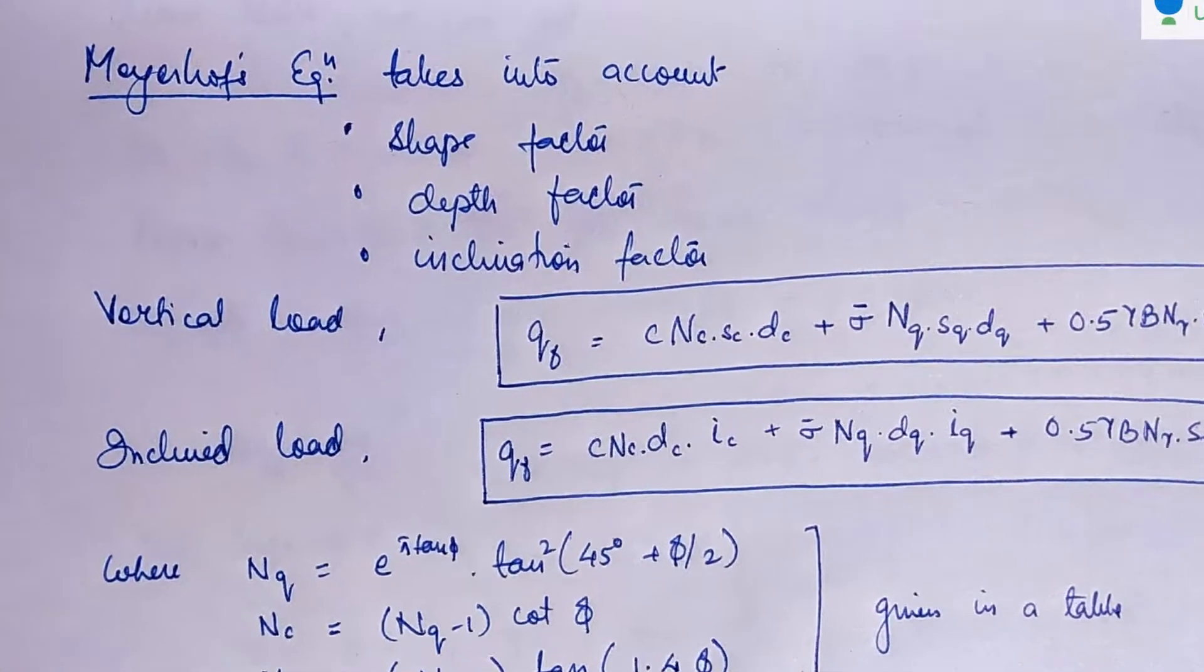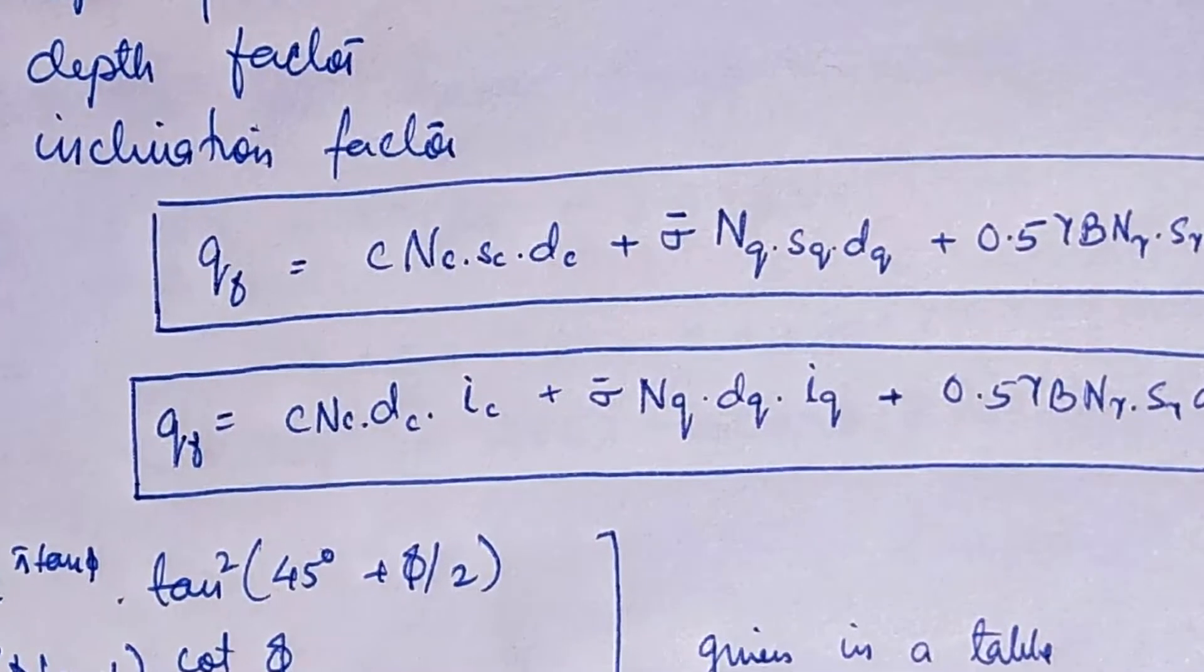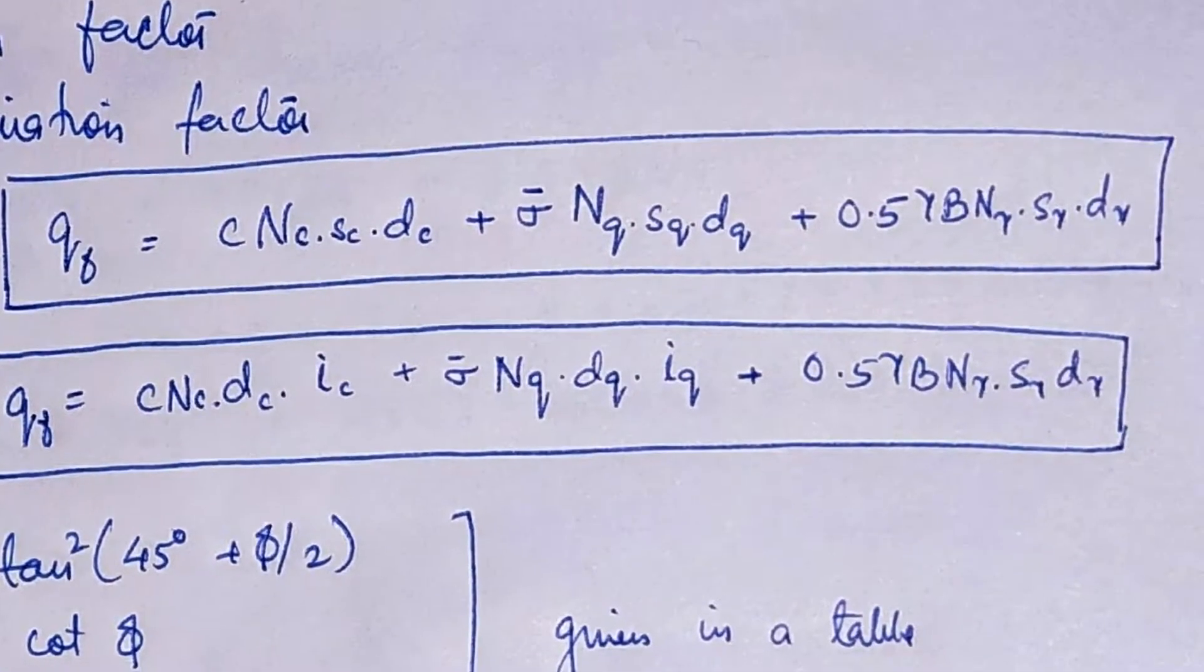The Meyerhof equation takes into account the shear factor, depth factor and inclination factor. Meyerhof's equation is more close to the actual loading conditions. The vertical load QF equals C·NC·SC·DC plus sigma bar·NQ·SQ·DQ plus 0.5·gamma·B·N gamma·S gamma·D gamma.